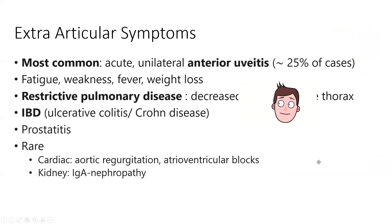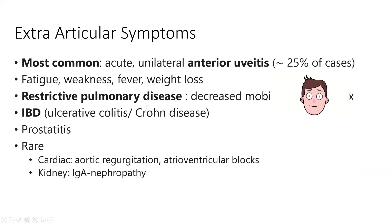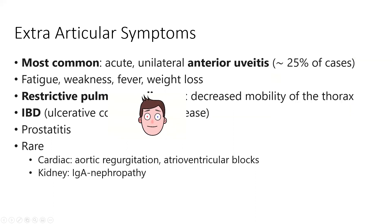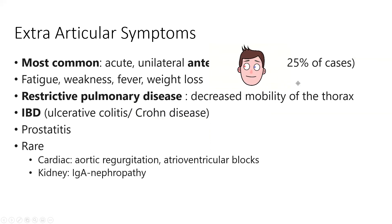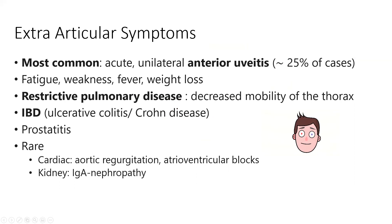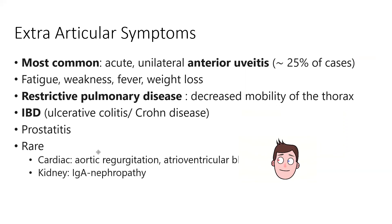Extra-articular symptoms refer to symptoms outside the spine and joints. The most common is anterior uveitis, occurring in roughly a quarter of all cases. Fatigue, fever, weight loss, and weakness are nonspecific but commonly seen. Restrictive pulmonary disease occurs because the costovertebral joints — attaching the spine to the ribs — can become sclerosed and stiffened, restricting deep breathing. IBD such as Crohn's and ulcerative colitis, and prostatitis, are also seen.